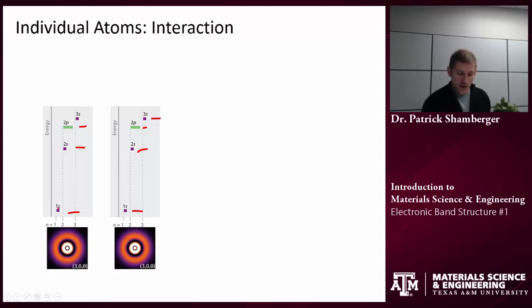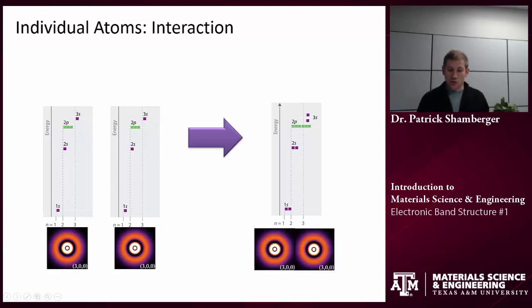Electrons can fill any of these energy levels. And in the sodium atom, we have two electrons in the 1s, 2 in the 2s, 6 in the 2p, and 1 in each of the 3s orbitals. Now as they start to get closer and closer together, those wave functions will interact. And you see what happens.